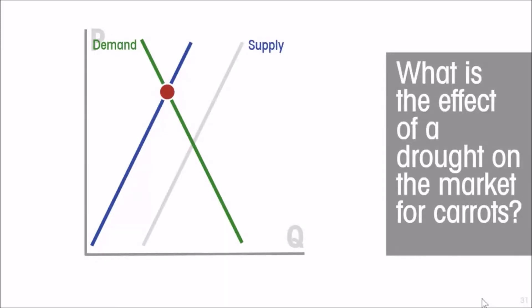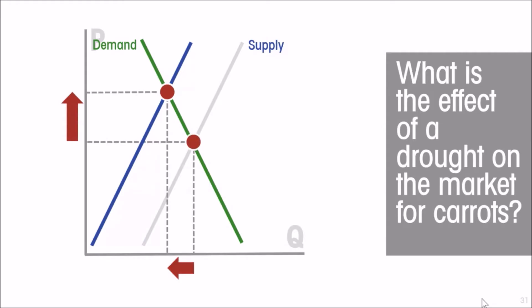The rise in quantity supplied and the fall in quantity demanded causes the market to clear as price rises. As a result of the drought, we end up with a fall in the amount of carrots traded and a rise in price. We have used our model of the market to work out the effect of drought on both the quantity traded and the price.